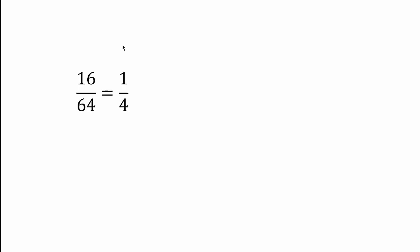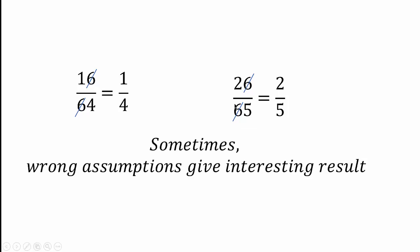Hello friends, welcome. Have you seen such fractions like this? And a weird method of doing it, like cutting 6 and 6 in the numerator and denominator to get 1 over 4, and similarly cutting 6 and 6 to get 2 by 5, which is not a mathematical process, but the result is the same — we get the right result. So sometimes wrong assumptions also give interesting results.